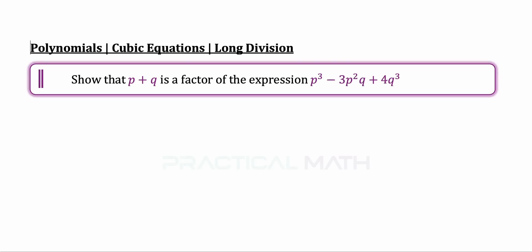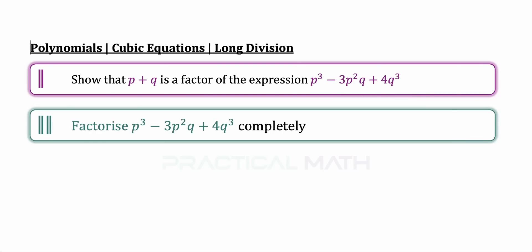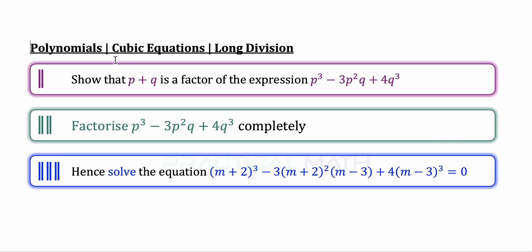In the first part of this question, show that p plus q is a factor of the expression p cubed minus 3p squared q plus 4q cubed. In the next part, factorize the same expression completely. In the last part, using both part 1 and part 2, solve the equation of n plus 2 cubed minus 3 times of n plus 2 squared multiplied by n minus 3 plus 4 times of n minus 3 cubed equals zero.